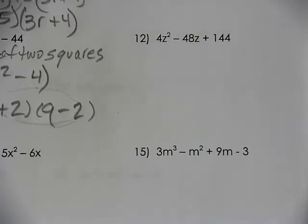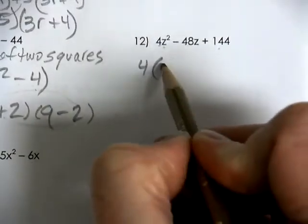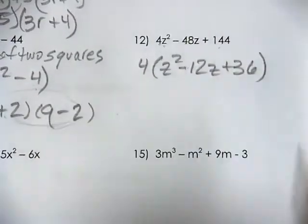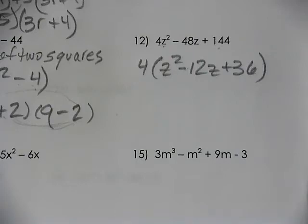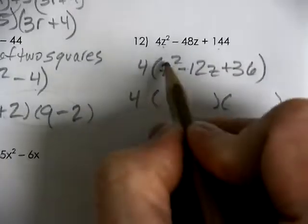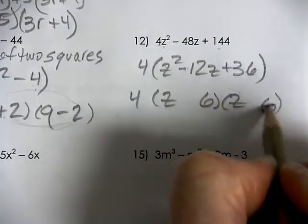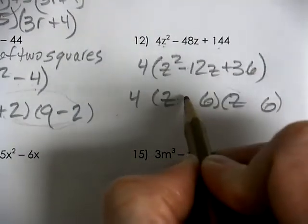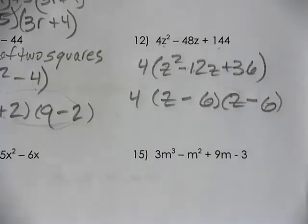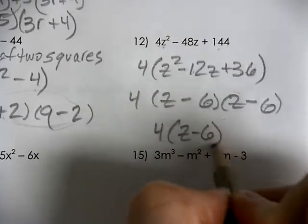Number 12 has a 4 in every term, so factoring that out leaves Z squared minus 12Z plus 36. This is a perfect square trinomial. Z times Z and 6 times 6 makes 36 and adds to be 12. Both have to be negative to add to be negative 12 and multiply to be positive 36. So the best way to write that answer is (Z minus 6) squared.